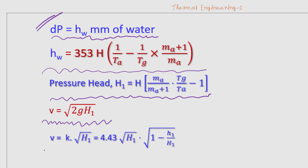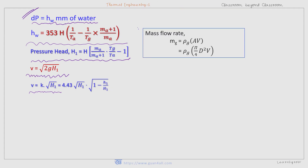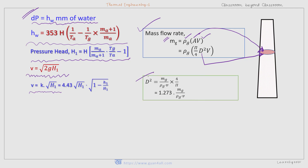But if there is any loss due to the material of the chimney, the formula is V equal to K into root over H1. For mass flow rate, the formula is mg — mass of gas flow — equal to rho_g, the density of gas inside the chimney, multiplied by A, the cross-sectional area of the chimney, and V, the velocity of flow. If A is the cross-sectional area, then D is the diameter of the cross-section, and we can find the diameter of the chimney using this formula.